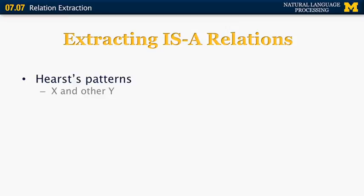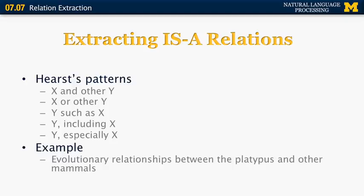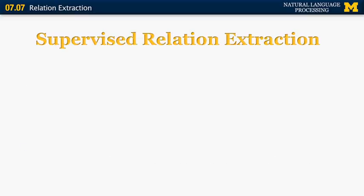This example comes from a paper by Marti Hearst from the 90s. She says that to extract is-a relations, you have to find patterns that say something like this: x and other y, or x or other y, y such as x, y including x, y especially x, where y is the more general category and x is the less general category. For example, evolutionary relationships between the platypus and other mammals. In this case, the expression and other gives us a hint that platypus is x and mammal is y and more specifically that platypus is a kind of mammal.